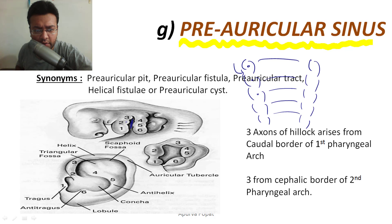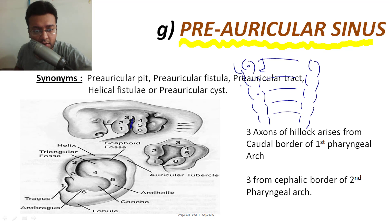This is the lateral view of the pharyngeal arch and this is the frontal view of the pharyngeal arch. The depression from the inside is called the pharyngeal pouch, as seen on this lateral view.